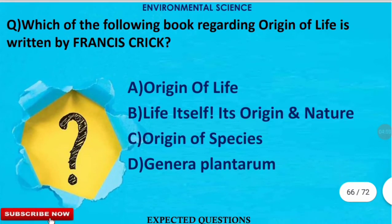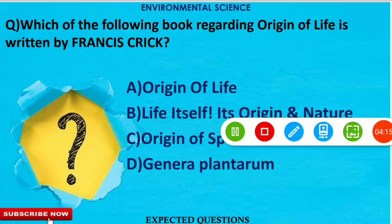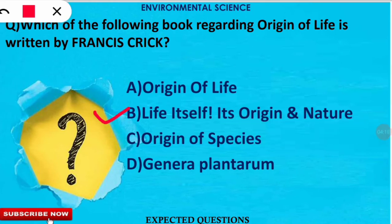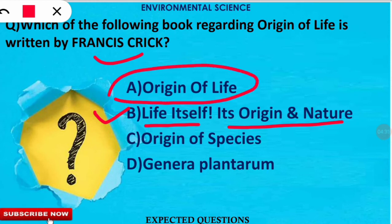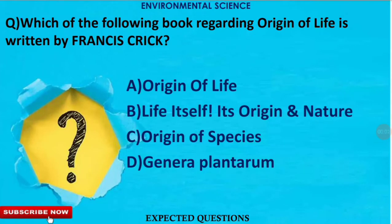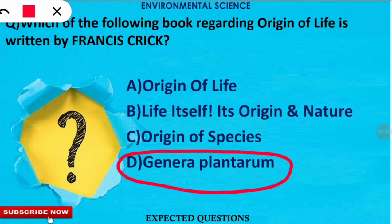The next question is: which book regarding the origin of life was written by Francis Crick? The correct option is option B. Francis Crick, known for the Watson and Crick model of DNA, wrote the book 'Life Itself: Its Origin and Nature.' Do not confuse this with 'The Origin of Life,' which was written by Alexander Oparin. As a bonus question, write in the comments who wrote the book 'Genera Plantarum.'